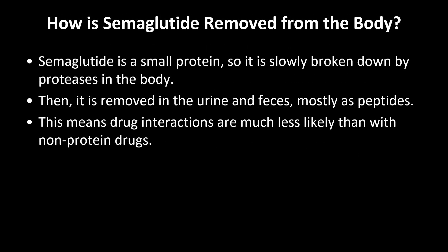One of the real positives about semaglutide is that it is not a small molecule — rather it is a small protein. This means it's actually bigger than most small molecule drugs. This means it is not likely to interact with other drugs, because it is not metabolized in the liver. It is mostly broken down by proteases, which are enzymes that degrade proteins in the blood, and then is eliminated in the urine and in the feces.